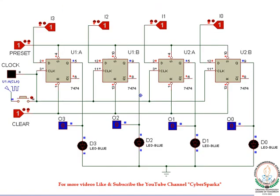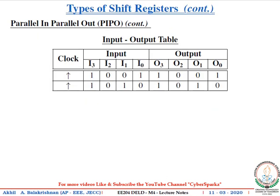First, let's check the asynchronous inputs: making the preset to zero will set all the flip-flops, and making the clear to zero will reset all the flip-flops. Now provide the input data — set it to 1010. A clock pulse is given, which sets the output of each flip-flop to the required value. Within one clock pulse, the input data is stored into the flip-flops and we obtain the parallel output as the same input data: 1010.